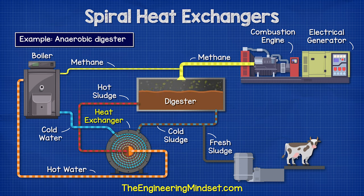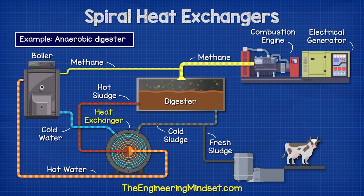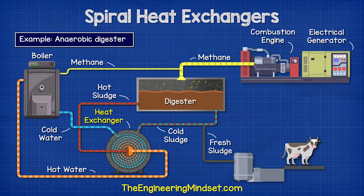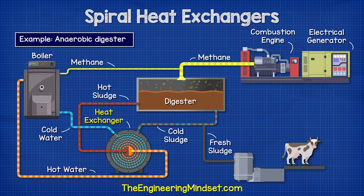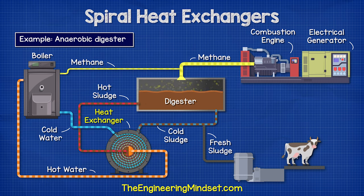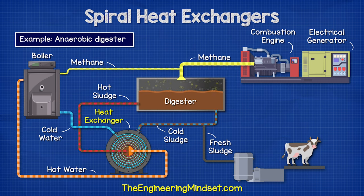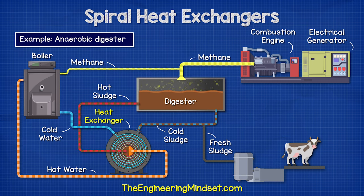For example, in an anaerobic digester where the thick sludge is recirculated through a spiral heat exchanger to maintain a certain temperature. This releases methane from the digester to power an engine and then turn an electrical generator.